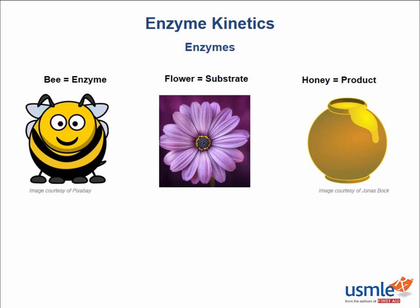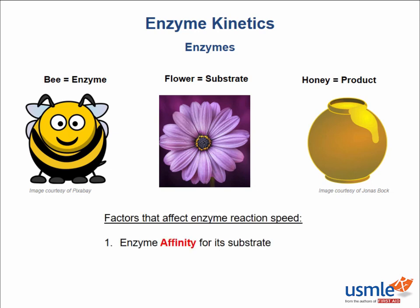The bee attaches to the flower and eventually converts the pollen into honey. As you may remember from chemistry, the rate or speed of enzyme reactions depends on a few factors: one, the affinity of an enzyme for its substrate — how well the bee can find and attach to the flower — and two, the enzyme concentration, or how many functional enzymes are around to produce product per unit time. The more healthy bees around, the more honey produced per unit time.